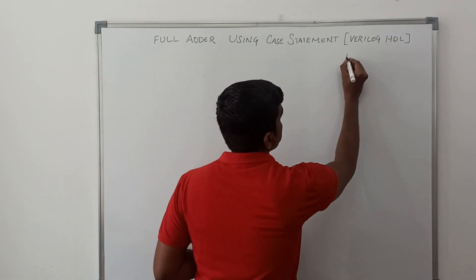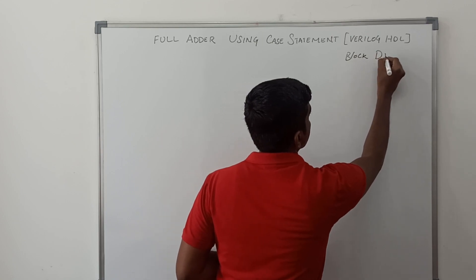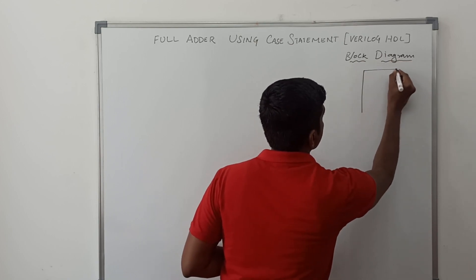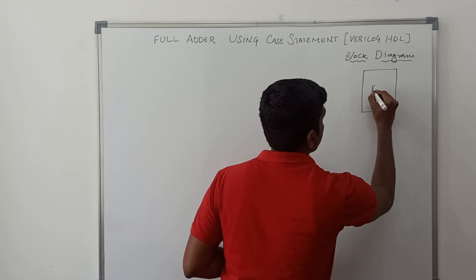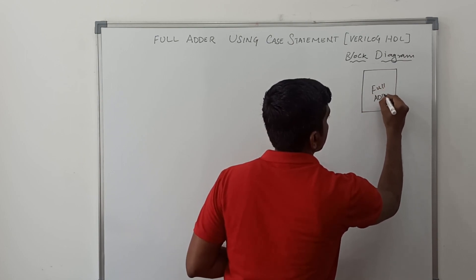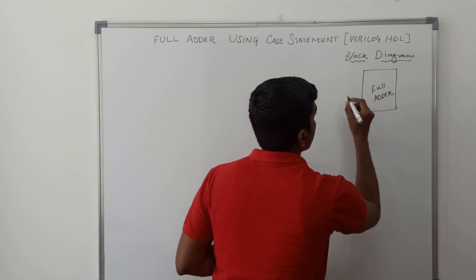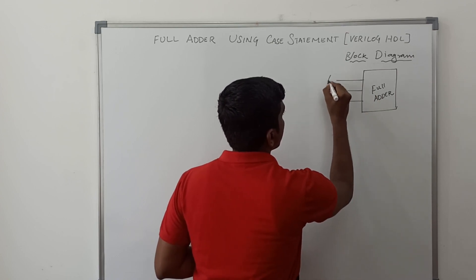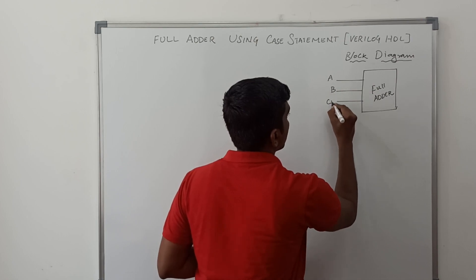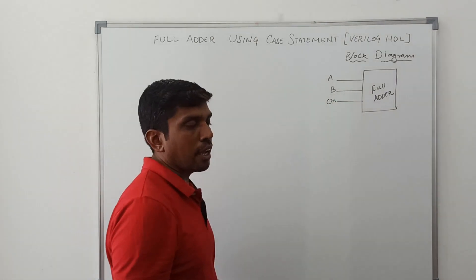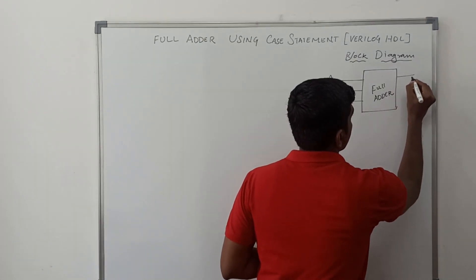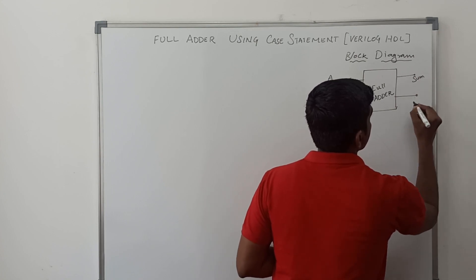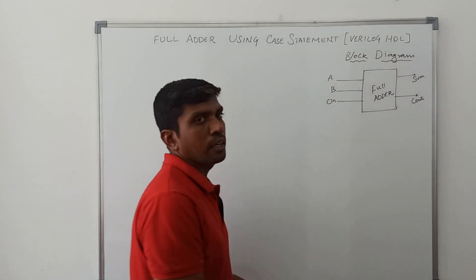First I draw the block diagram. So it's a full adder circuit. In this full adder circuit it has three inputs: A, B, and Cin — Cin is the carry input. This full adder circuit produces two outputs: the first output is Sum and the next output is Cout, the carry out.